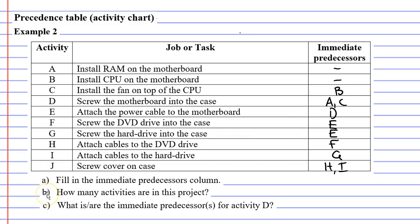Finally, we need to finish questions B and C. Question B asks how many activities are in this project — counting them up, there are 10 activities. For question C, it asks what are the immediate predecessors for activity D. When we look at activity D, it has two immediate predecessors: activities A and C. That concludes our video on example 2 — remember to read the description below for links to workbooks that relate to this video.